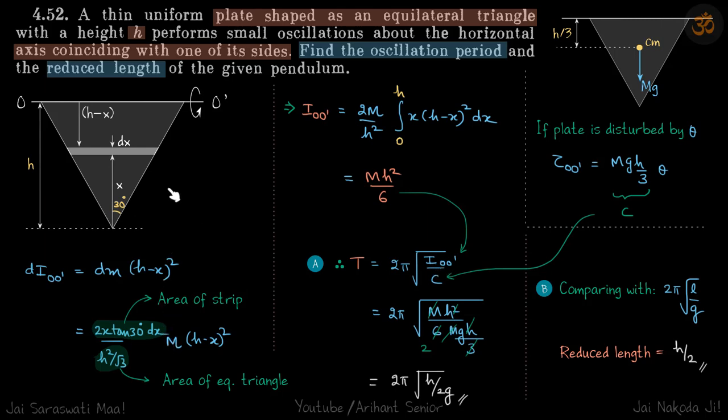So that's a basic calculation for moment of inertia, and c we'll get from torque. So we know for an equilateral triangle, in fact for any triangle, the centroid is where the center of mass is, and centroid is at a distance h/3 from this side. So if you displace it by angle θ, the restoring torque will be mg into this distance h/3 into θ. So this is the value of c in this formula.